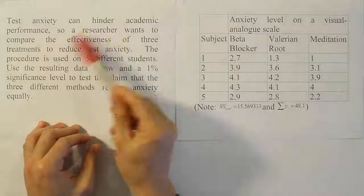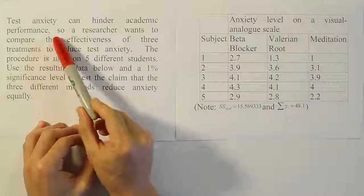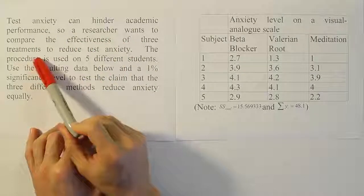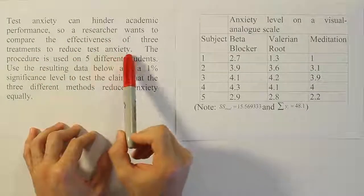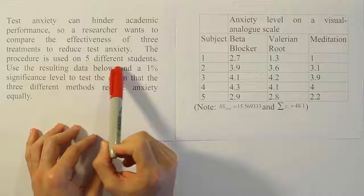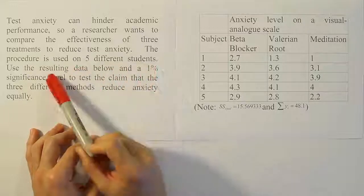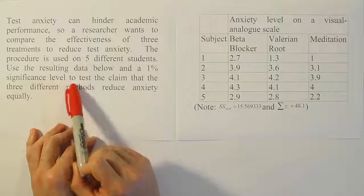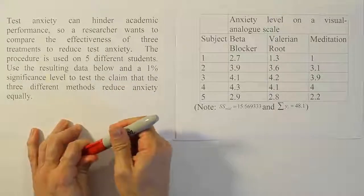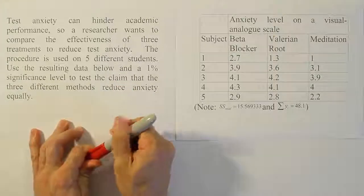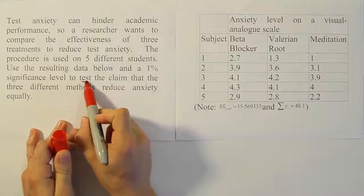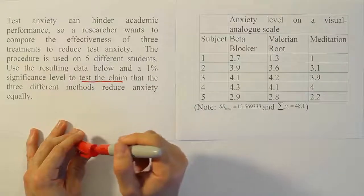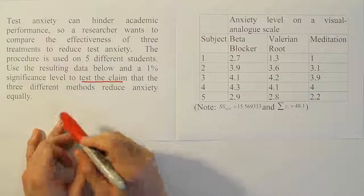Test anxiety can hinder academic performance. A researcher wants to compare the effectiveness of three treatments to reduce test anxiety. The procedure is used on five different students. Using the resulting data and a 1% significance level, we test the claim that the three different methods reduce anxiety equally.